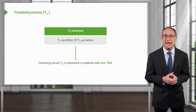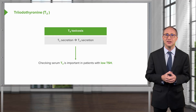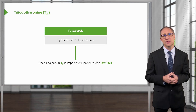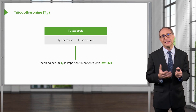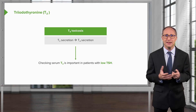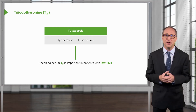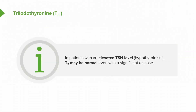Checking a serum T3 is necessary if the patient has a suppressed TSH level, because in some patients with thyrotoxicosis, only T3 may be preferentially secreted over T4 — a condition known as T3 toxicosis, which is also very rare. In patients with an elevated TSH level indicating hypothyroidism, T3 will be within the normal range even with significant disease.